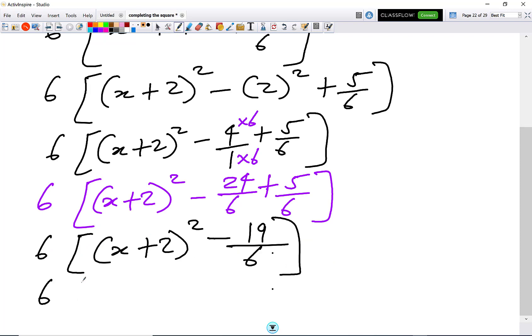Expand the brackets out. So we get 6(x + 2)² - 19/6 times 6 is simply -19. So I've completed the square there.